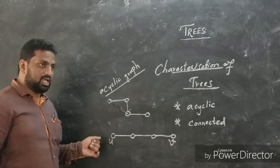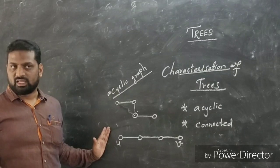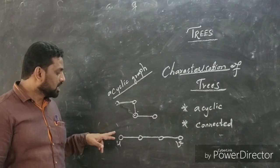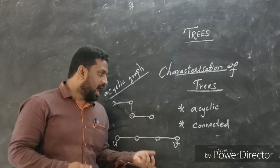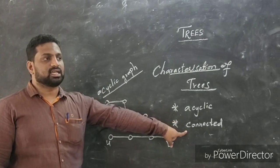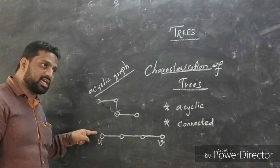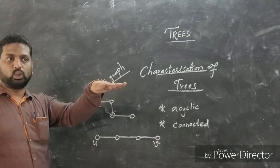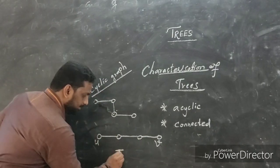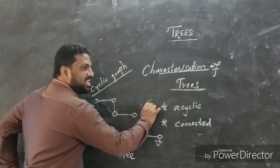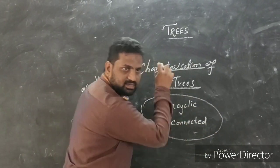Here we see: is this graph acyclic? This graph is acyclic because the starting point and the terminus points are different. Another condition is connected — this graph is connected because there is still a path between U and V. This graph is called a tree because it satisfies both conditions: acyclic as well as connected.